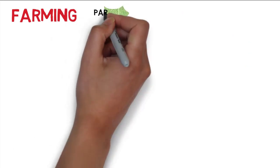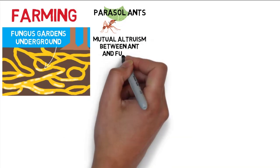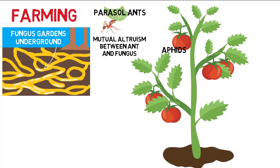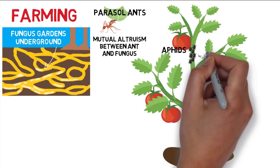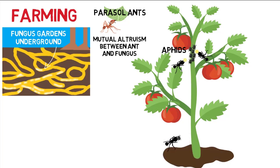Dawkins mentions farming among species of ants and termites, specifically the parasol ants of South America that build underground chambers to cultivate fungus gardens. The ants chew leaves into fragments as compost for the fungus, and the fungus is harvested as food; the ants weed the gardens and remove other fungal species, creating a relationship of mutual altruism. Similarly, aphids, greenflies, and similar bugs suck sap from plants and excrete a sugar-rich honeydew liquid. Ants milk the aphids by stroking their hindquarters, and the aphids gain protection from natural enemies. Ants also care for aphid eggs inside their underground nests, feed the young aphids, and carry them up to protected grazing grounds.